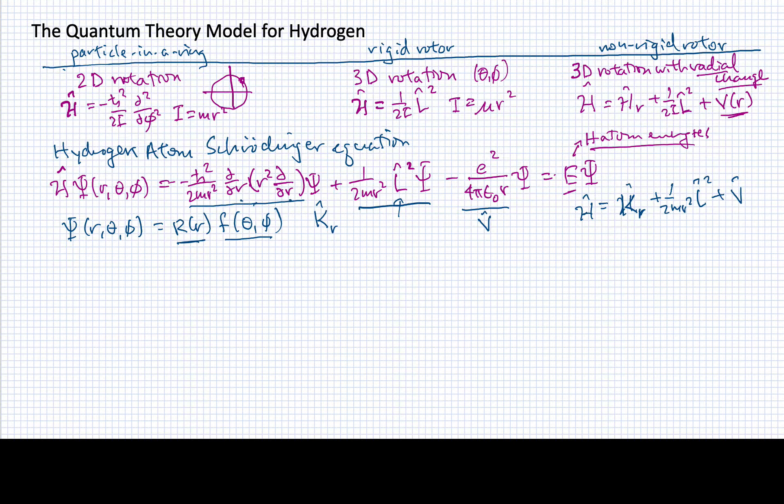The Coulomb operator, the potential energy operator, is just a multiplicative function, so it will operate equally well on both parts.